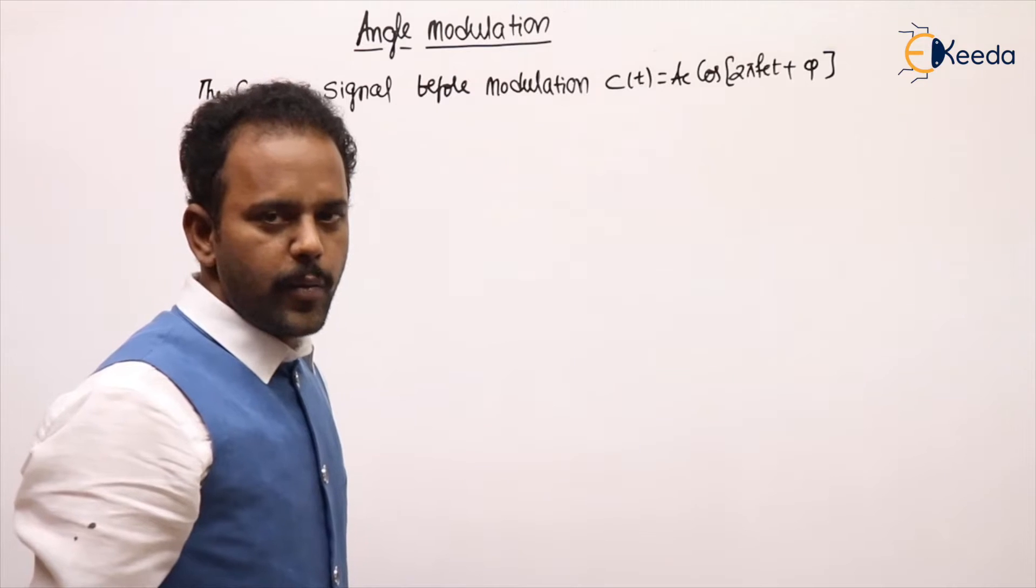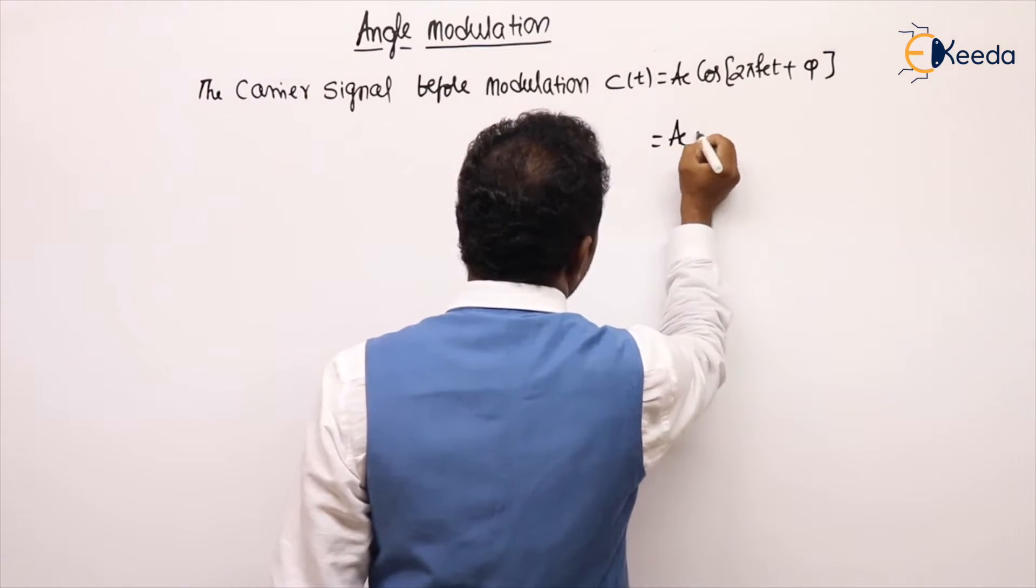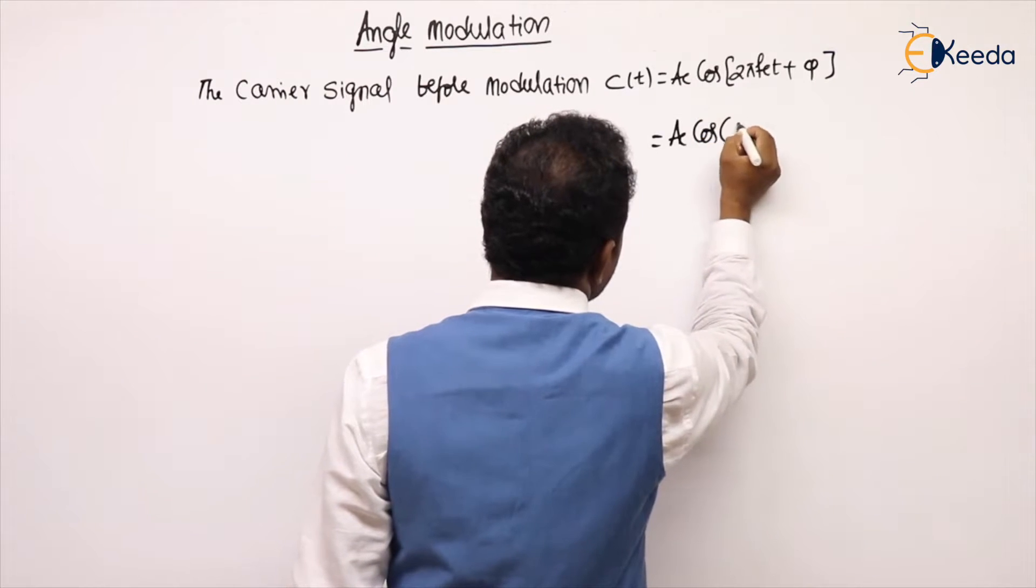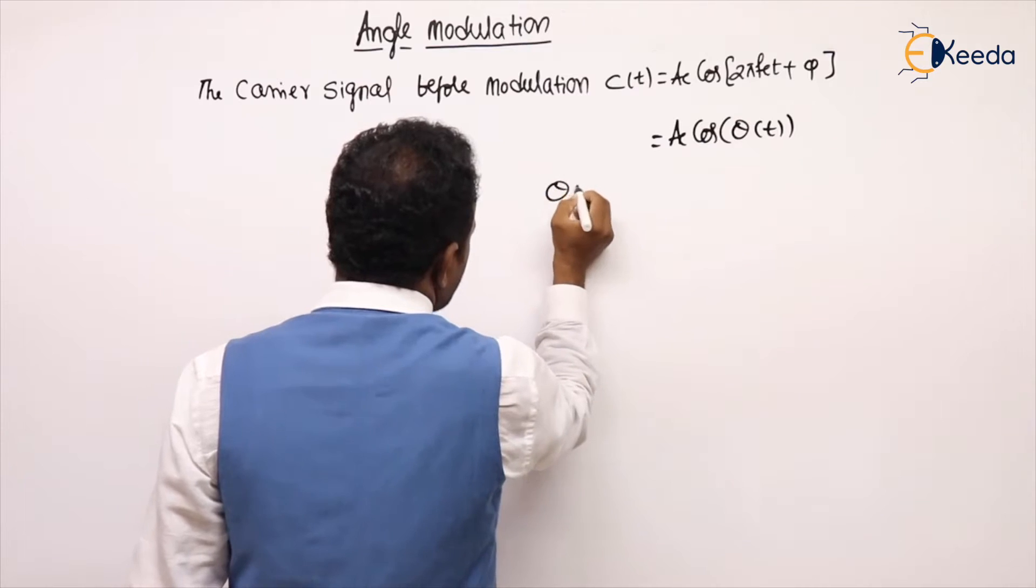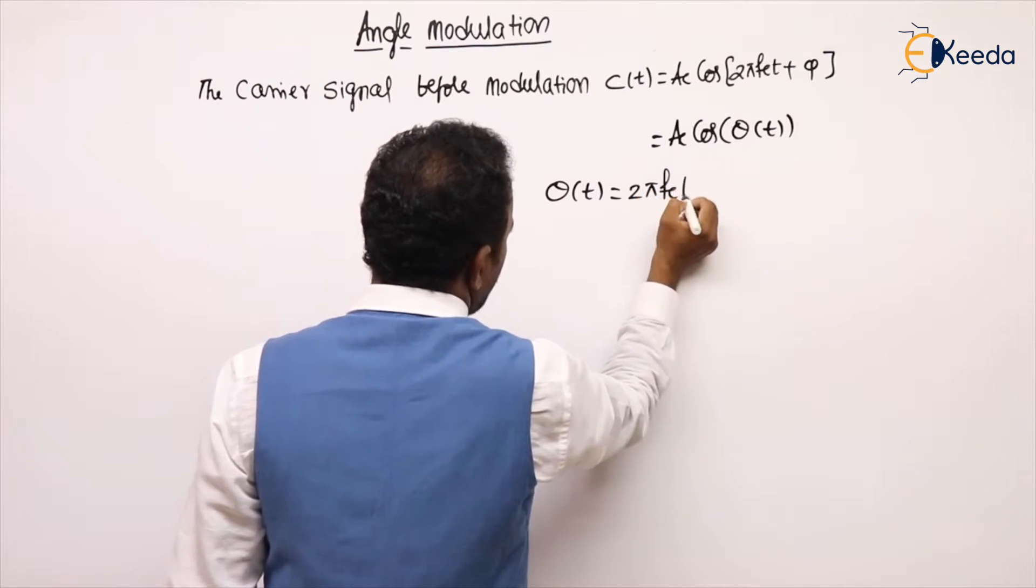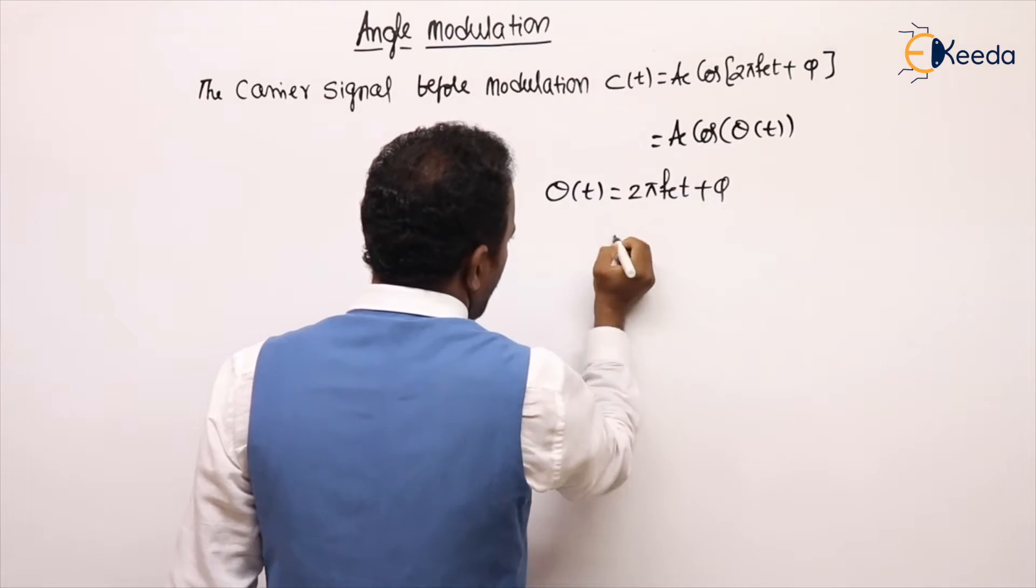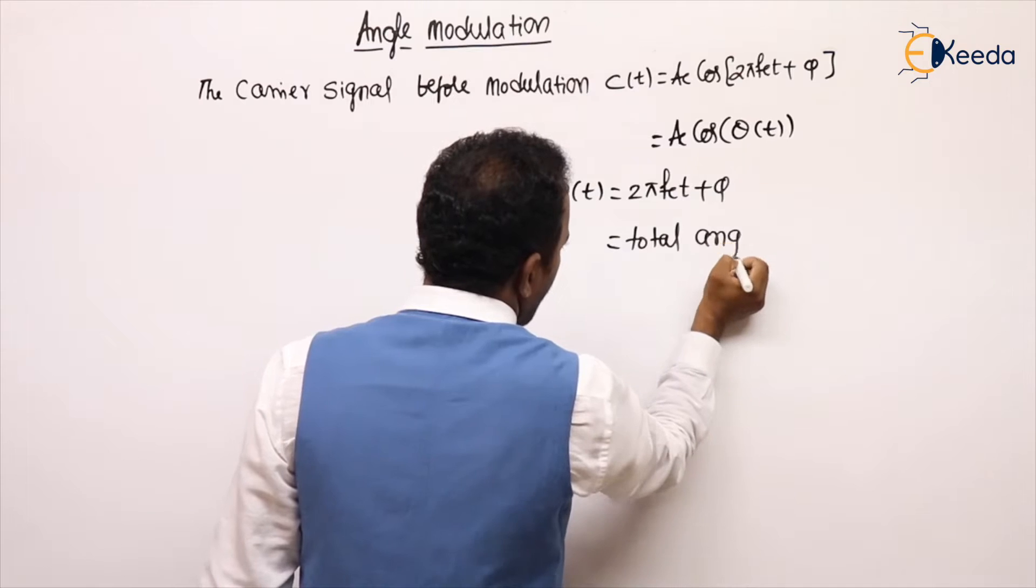This is a carrier before modulation means no changes. This is also equal to Ac cos θ(t), I am writing. Of course, θ(t) is nothing but 2πfct + φ. I am calling this θ the total angle.